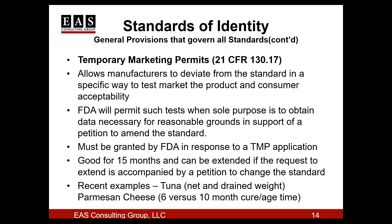So now we've arrived at the center of our webinar: temporary marketing permits, better known as TMPs. I've talked about establishing a new standard of identity and modifying a standard of identity — what other options would a firm have to produce a standard of identity food with some type of change? If a manufacturer wanted to produce a food outside of the standard of identity or modify the standardized product and then test market, provision 130.17 of the regulations allows a firm to send a request for a temporary marketing permit to FDA.